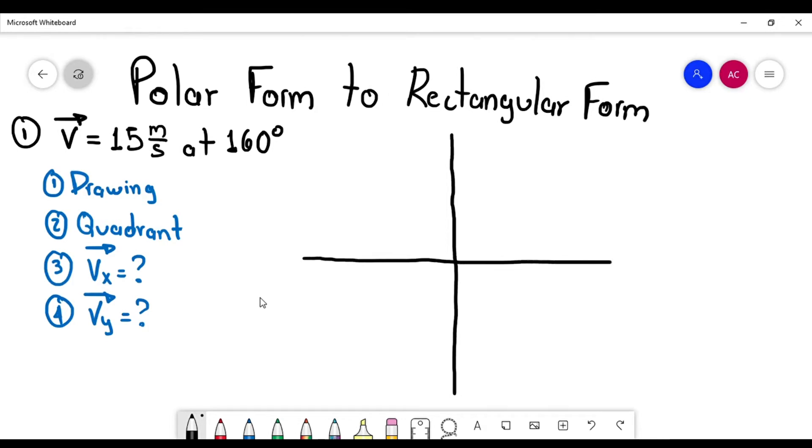This is the Cartesian plane. This is the X axis, the Y axis. I'm going to fill it with information: 0 degrees, 90 degrees, 180, and 270.